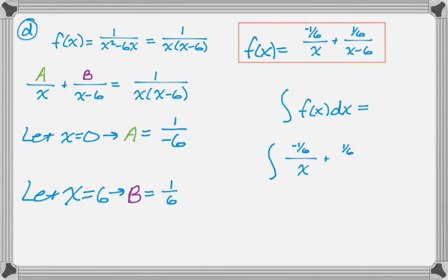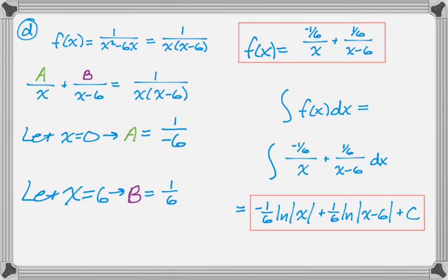And to integrate, I need to integrate that decomposition. And so that's just a couple natural logs. You don't even really need u-substitution. It's not bad at all. So I get negative 1/6 natural log of the absolute value of x plus 1/6 natural log of the absolute value of (x minus 6) plus C. And that is all there is to the question. So I hope you found this helpful, and good luck.